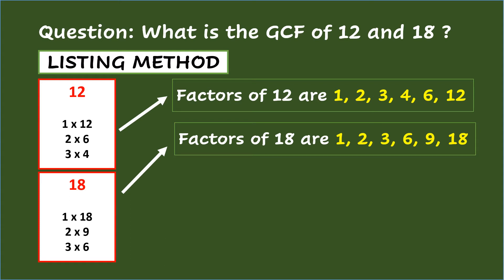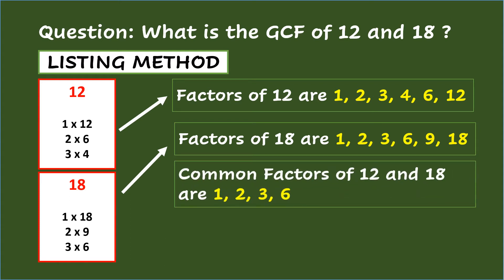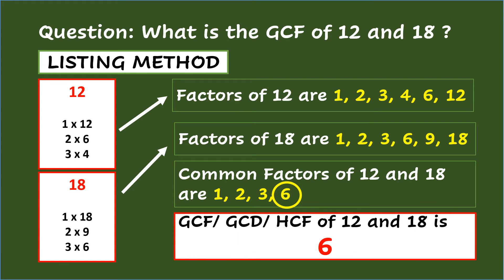With this list of factors, you will now get the common factors of 12 and 18, and these are 1, 2, 3, and 6. From the list of common factors, you will select the greatest, which is 6. So the GCF, GCD, and HCF of 12 and 18 is 6.